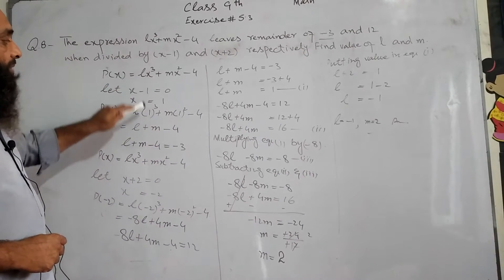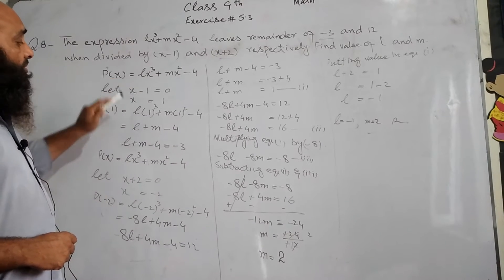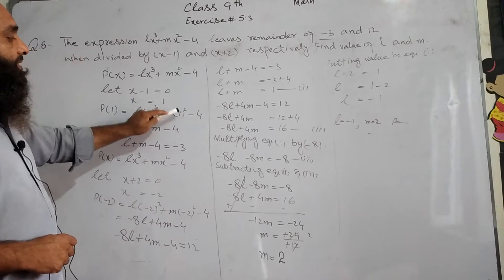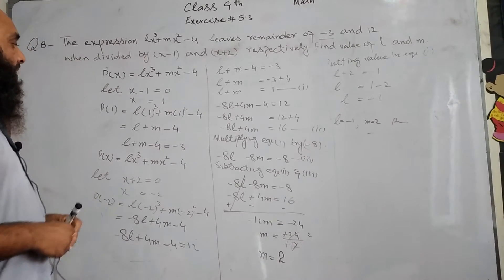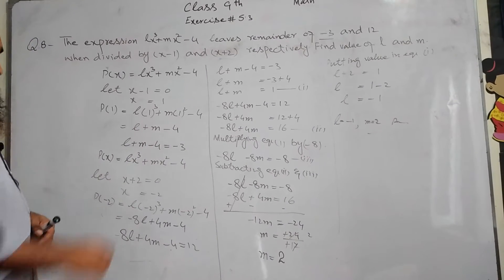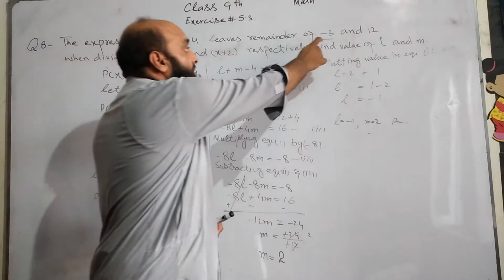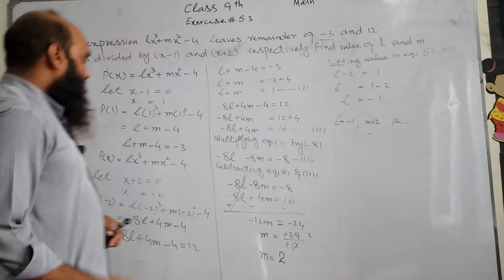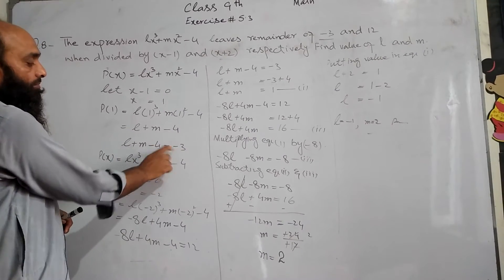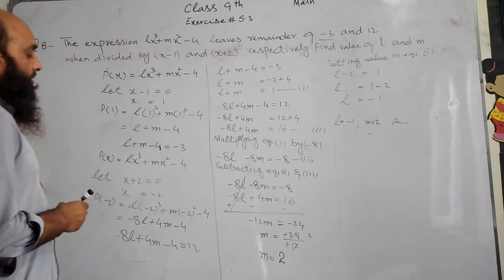And the remainder is -3. So we can do -3 for the remainder.